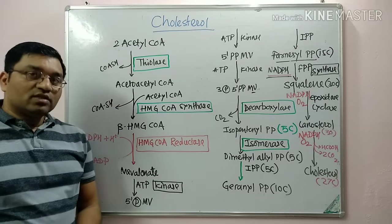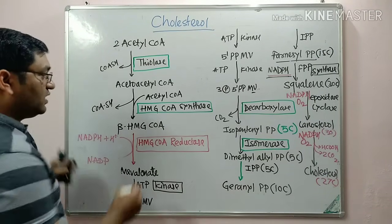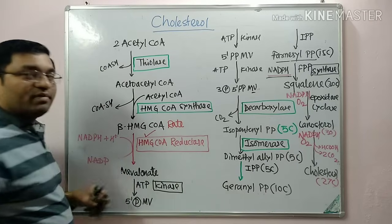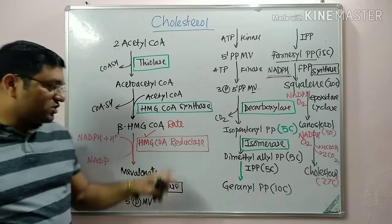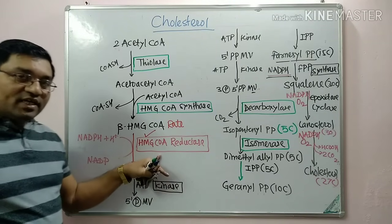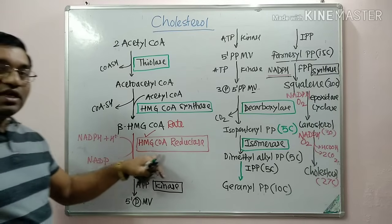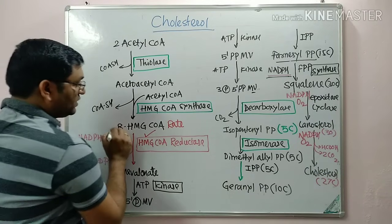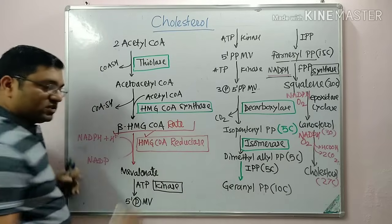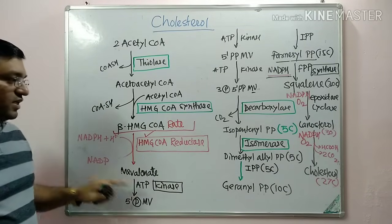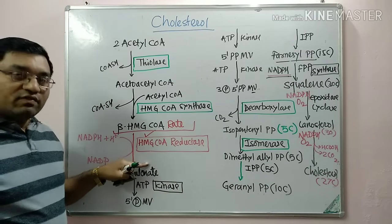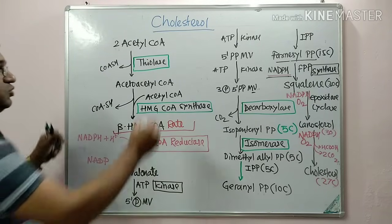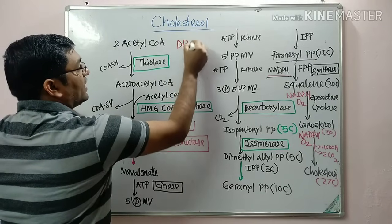Now coming to regulation — the main regulatory enzyme of this pathway is HMG-CoA reductase. It is both the rate-limiting step, because it decides the rate of cholesterol synthesis, and the committed step, because the pathway up to this point is common with ketogenesis, but after formation of mevalonate there is synthesis of cholesterol, making it unique to this pathway. The enzyme is regulated by two states: dephosphorylated and phosphorylated.